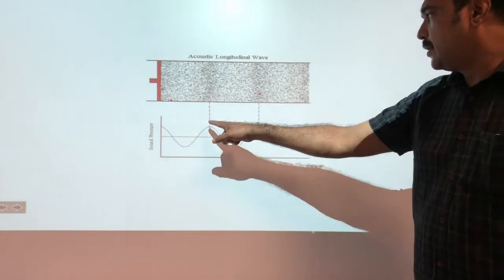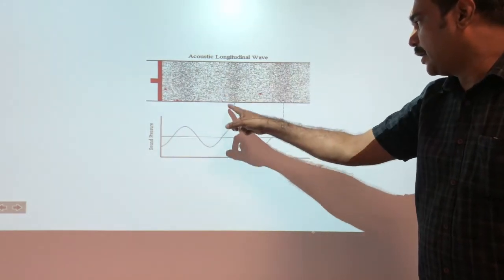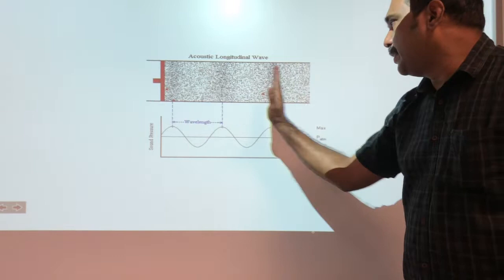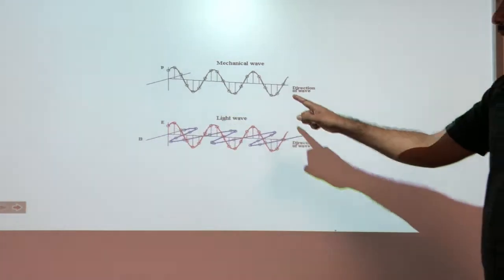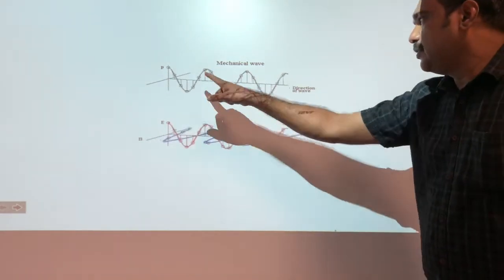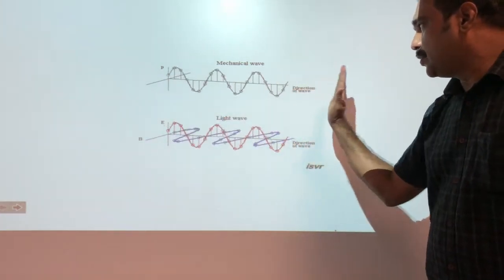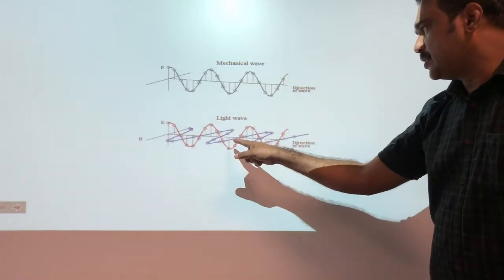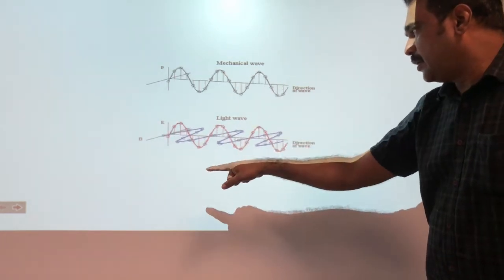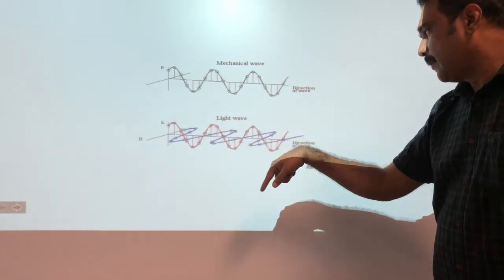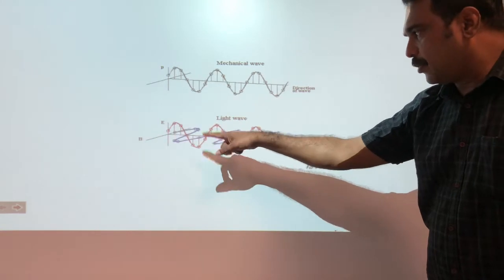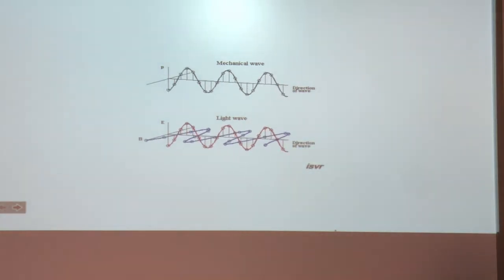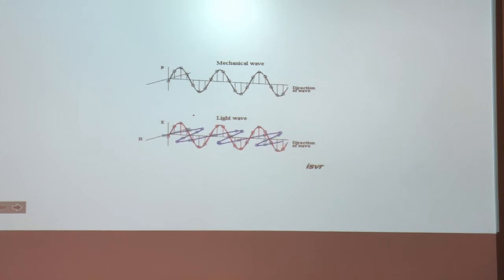You can see that the compression is transmitted through the medium. A light wave is a transverse wave with two components — the electrical component and the magnetic component. These are electromagnetic waves and all of you know these things well.